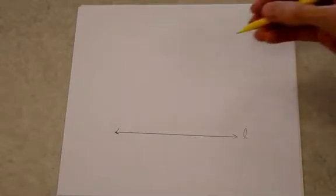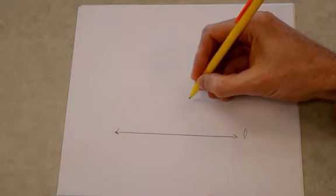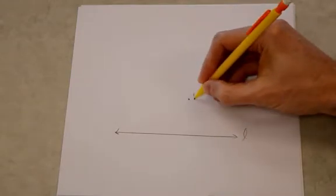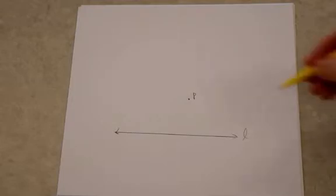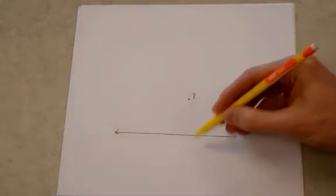And now what we need is a point not on this line that we can draw perpendicular through. I'll just put a point here, call it point P. So the goal is to draw a line through point P that is perpendicular to line L.